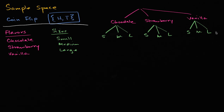And so you can see there are nine possible outcomes. For example, this is a medium chocolate — you picked a chocolate and it was a medium one. This is a large vanilla — you picked a vanilla and it is a large one.